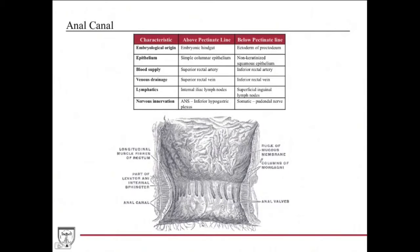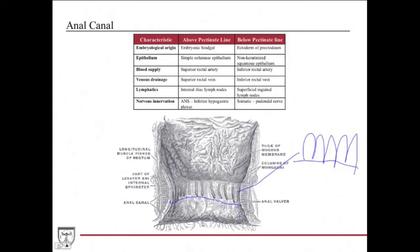Looking at the histology of the mucosa relative to the pectinate line: above the line, the epithelium is simple columnar epithelium, just like the rest of the GI tract. Below the pectinate line, as you get closer to the anal orifice near the skin, you have non-keratinized squamous epithelium.